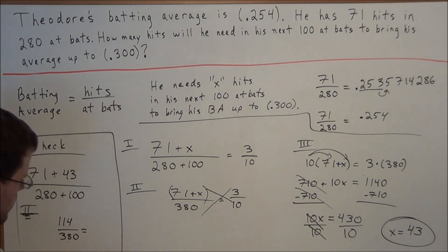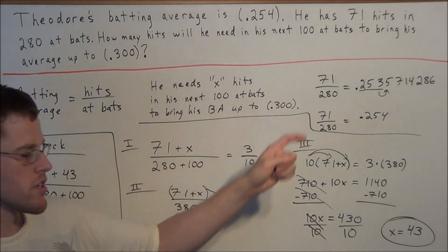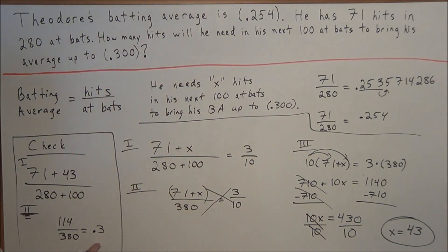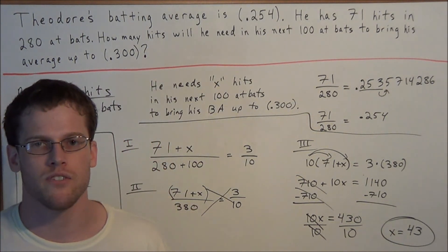And if you work this out on a calculator, you'll see that this is going to reduce to 0.3. And now 0.3 doesn't necessarily match this 0.300, but in decimals remember 0.3 equals 0.300, so we can always just throw on two extra zeros because they're just placeholders. So the answer we found, x equals 43, does in fact satisfy this problem. So Theodore is going to need 43 more hits to bring his average up to 300.